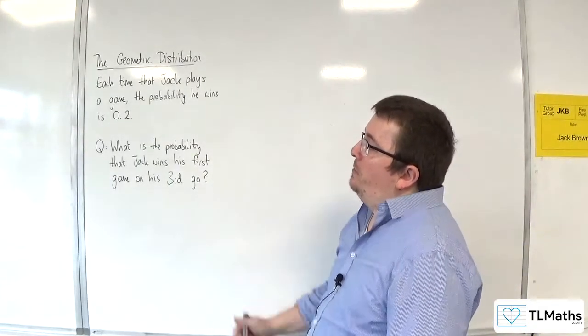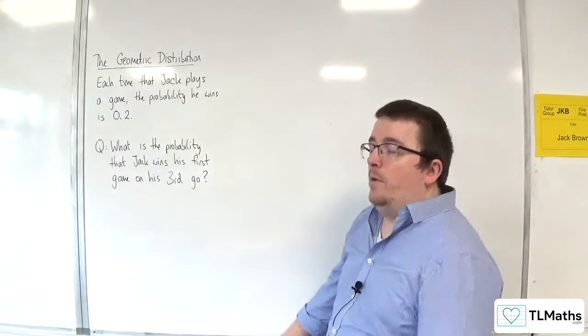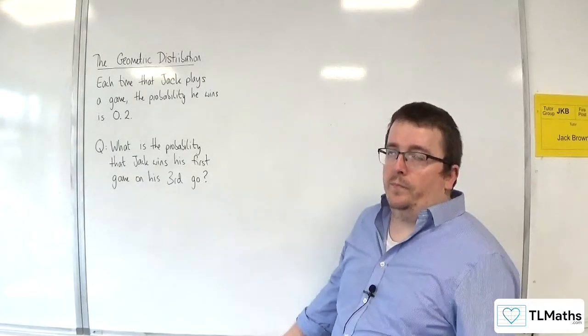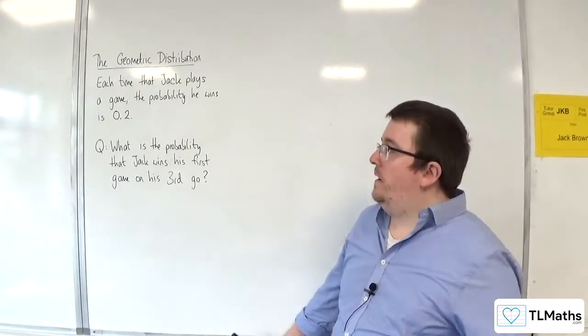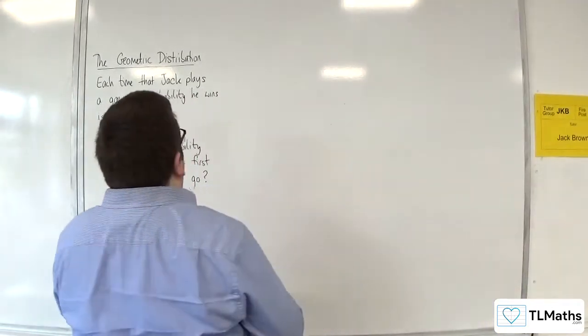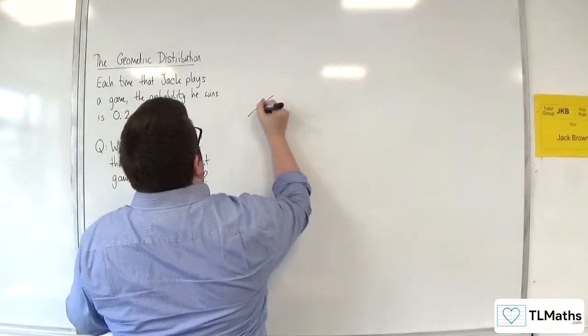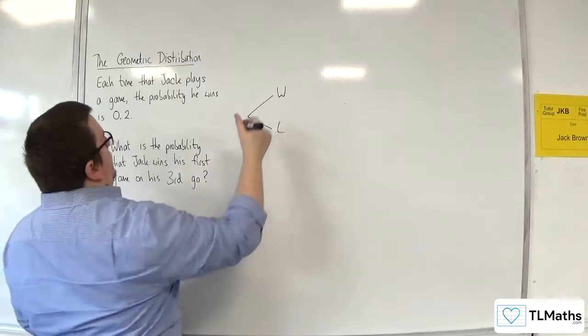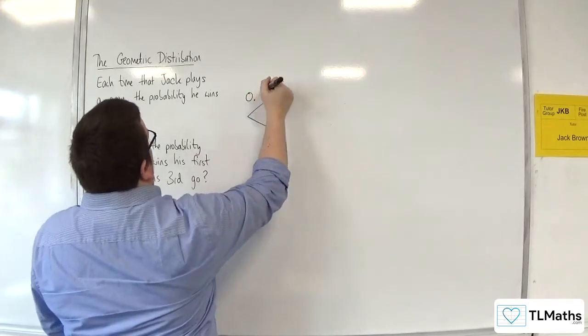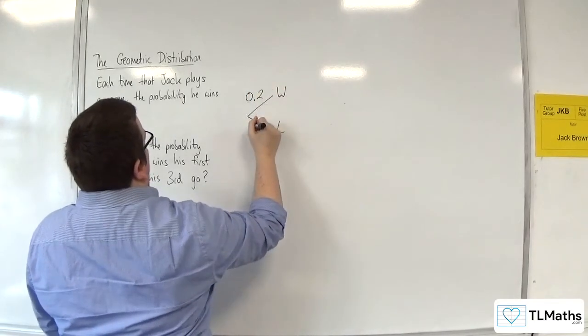What is the probability that Jack wins his first game on his third go? You can visualize this as a probability tree. I'm either going to win or lose on the first go. So that's going to be 0.2, 0.8.